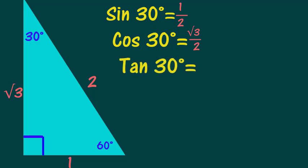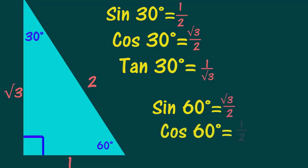The tangent of 30° is the opposite over the adjacent, 1/√3. Let's look at the 60 degree angle. The sine of 60° is the opposite over the hypotenuse, or √3/2. The cosine of 60° is 1/2.